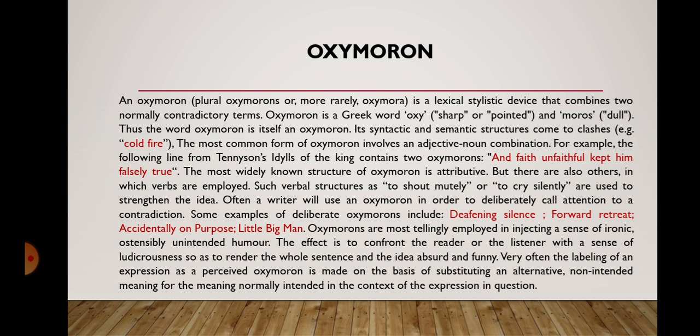Often, a writer will use an oxymoron in order to deliberately call attention to a contradiction. Some examples of deliberate oxymorons include: 'deafening silence,' 'forward retreat,' 'accidentally on purpose,' 'little big man.' Oxymorons are most telling when employed to inject a sense of ironic, ostensibly unintended humor. The effect is to confront the reader or listener with a sense of the ludicrous so as to render the whole sentence and the idea absurd and funny. Very often, the labeling of an expression as an oxymoron is made on the basis of substituting an alternative non-intended meaning for the meaning normally intended in the context.